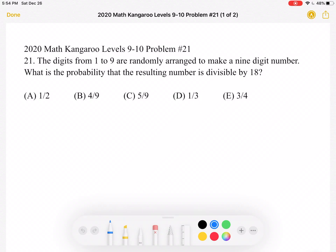This is the 2020 Math Kangaroo levels 9-10 problem number 21. The digits from 1 to 9 are randomly arranged to make a nine-digit number. What is the probability that the resulting number is divisible by 18?